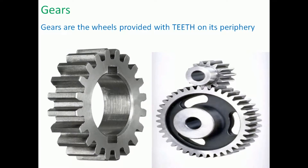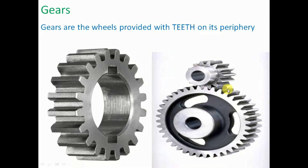Gears are wheels provided with teeth on their periphery. When two gears are used for power transmission, the teeth of one gear mesh with the teeth of the other in order to transmit the power.